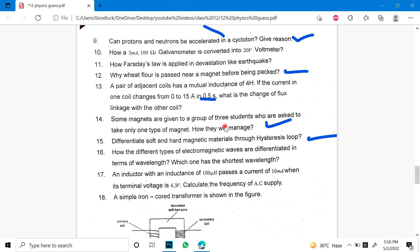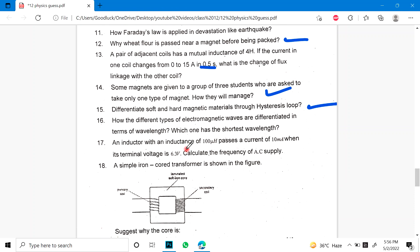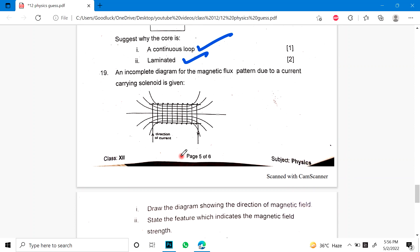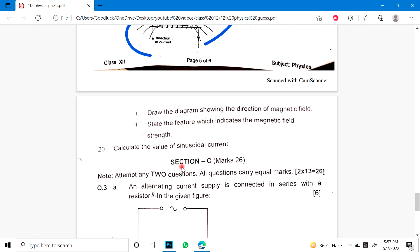17: An inductor with an inductance of 100 µH passes a current of 10 mA. When its terminal voltage is 6.3V, calculate the frequency. 18: A simple iron core transformer is shown in the figure. Suggest why the core is continuous loop and laminated. 19: An incomplete diagram for a magnetic flux pattern due to current carrying solenoid is given. This is a diagram given. Draw a diagram showing the direction of magnetic field. State the feature which indicates the magnetic field strength. 20: Calculate the value of the sinusoidal current which has written value in RMS.